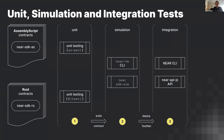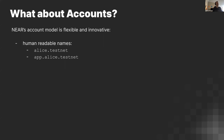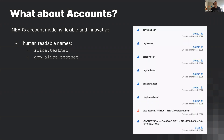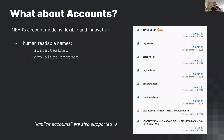Those are the three kinds of testing: unit testing, simulation testing, and integration testing. NEAR uses human-readable account names like 'alice.testnet' or 'app.alice.testnet' with no apparent limit to sub-accounts. There are also implicit accounts — similar to Ethereum-style addresses — that don't cost storage upfront. To activate one, you send some tokens to that implicit account, and it serves as a temporary name before you get a human-readable one.